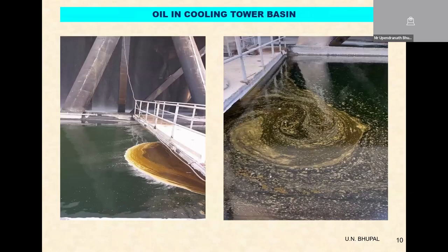When we come to the operational aspects, you are able to see a huge amount of oil floating in the basin — the water surface has a large layer of oil and nobody in the plant knows how this oil came into the cooling system. When this large amount of oil is circulated through the distribution system, it forms a layer not only in the distribution system but on the fill packs as well. So the evaporation loss that is supposed to happen to cool water will not happen if there is oil in circulation.